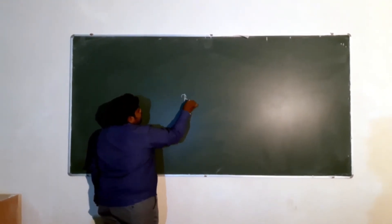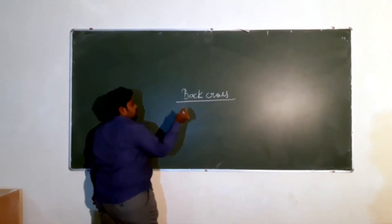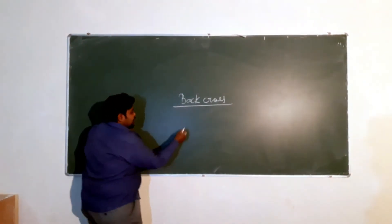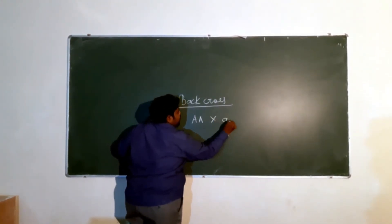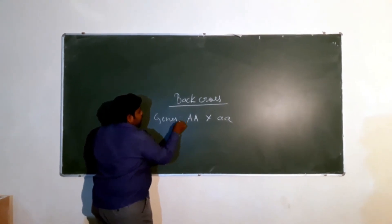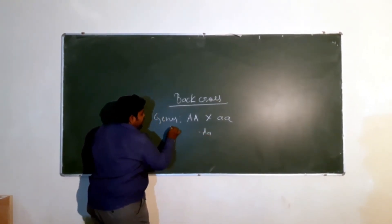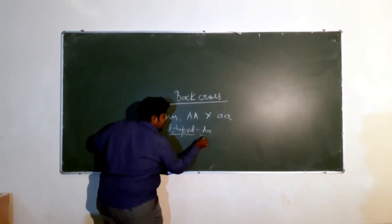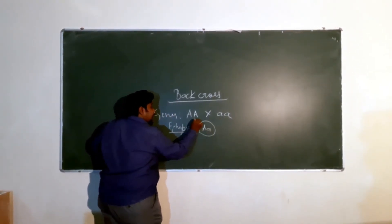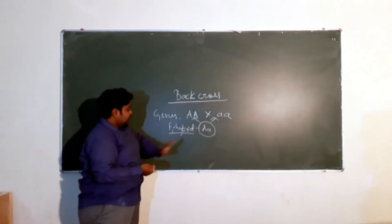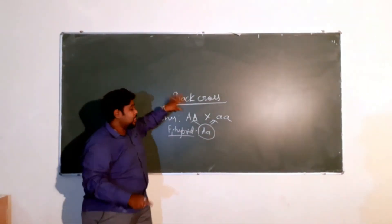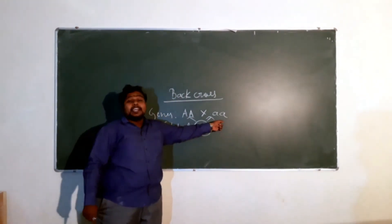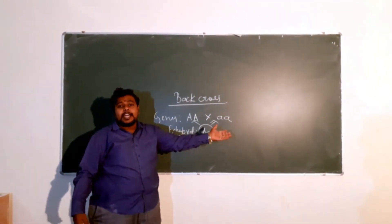The next topic is back cross. What do we mean by back cross? Back cross is similar to your test cross. Let's take an example: capital A, capital A is crossed with small a, small a, to get capital A, small a as your F1 hybrid. The F1 hybrid is then crossed with either of the parents — both a recessive parent as well as a dominant parent. To get the test cross, you cross only with the recessive parent. But in a back cross, you can cross the F1 hybrid with any of the parents. That kind of cross is called a back cross.